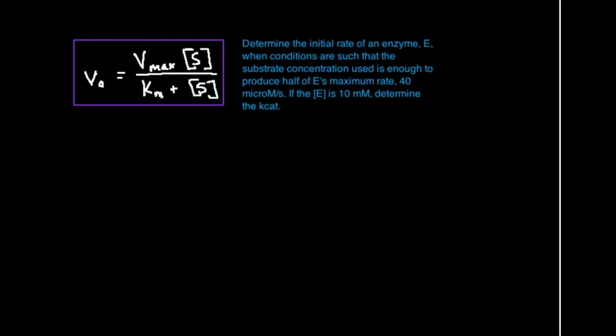In this video we're going to look at a practice problem — something that could appear on your test, a calculation kind of problem. The question: determine the initial rate of an enzyme E when conditions are such that the substrate concentration used is enough to produce half of the enzyme's maximum rate, which is 40 micromolar per second. The second part is: if the enzyme concentration is 10 millimolar, determine the Kcat.